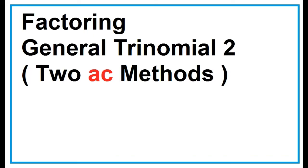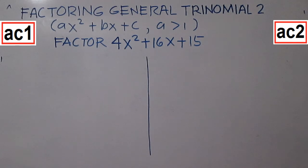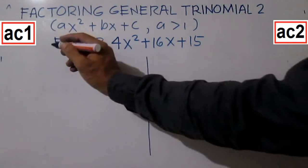Factoring general trinomials using two AC methods. Aside from the trial and error method, we can also factor trinomials of the form AX squared plus BX plus C using two AC methods. It is called AC because you start by multiplying A and C.